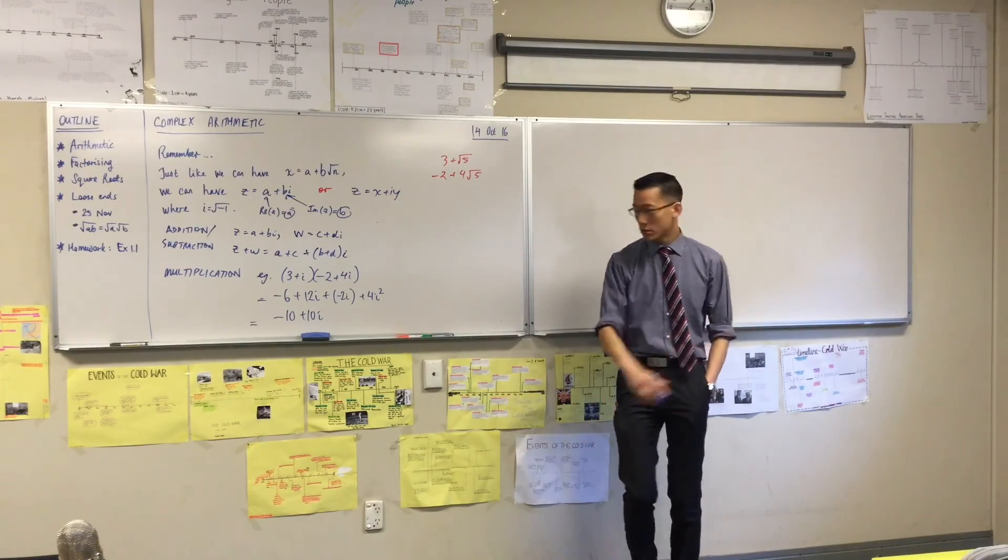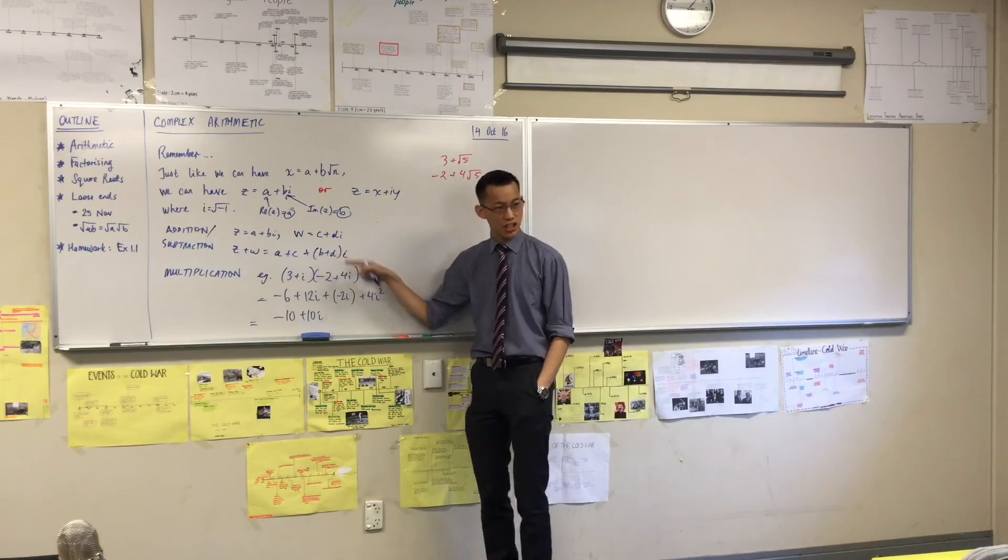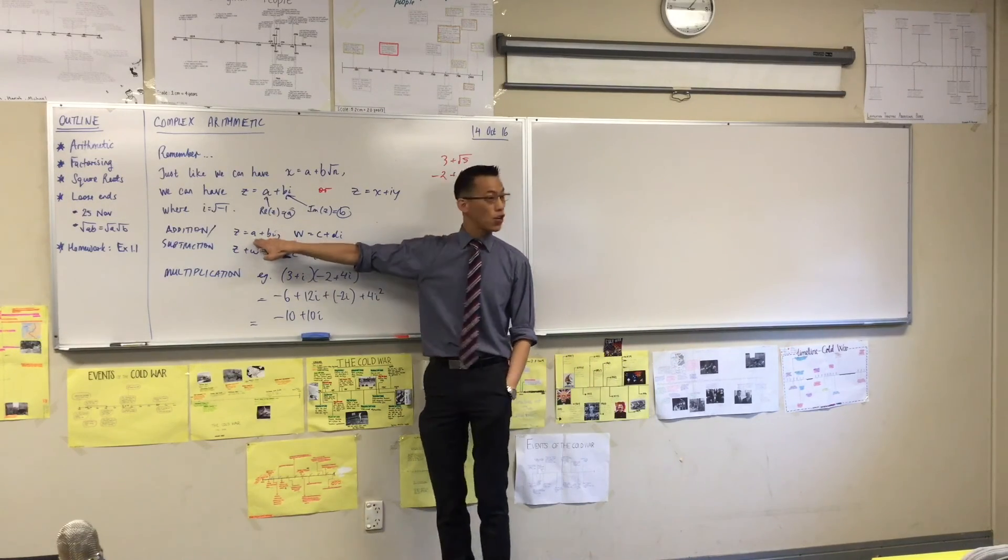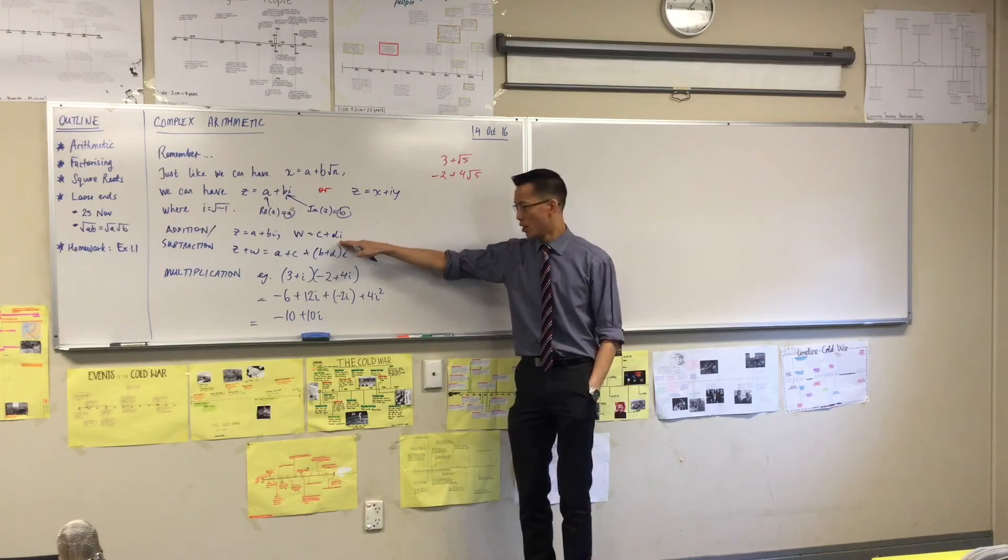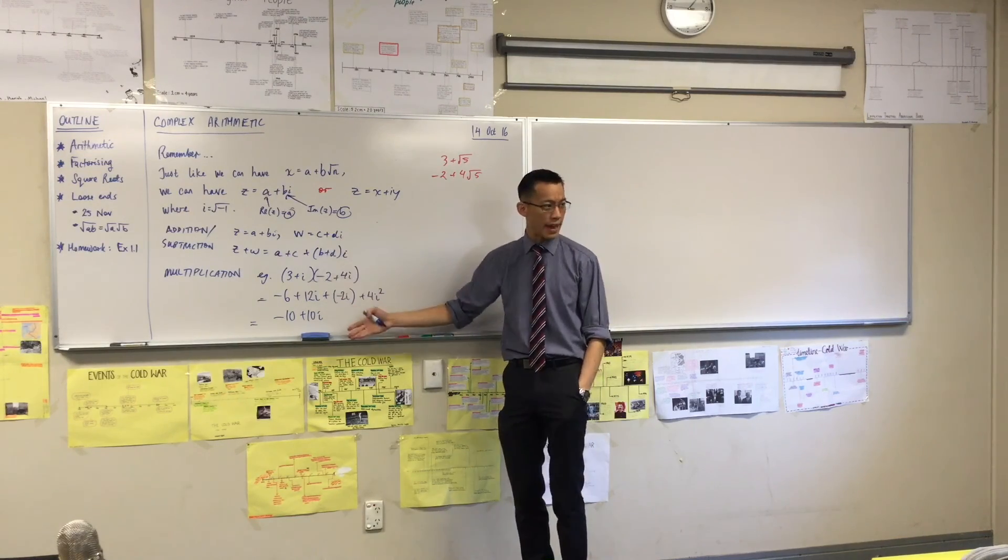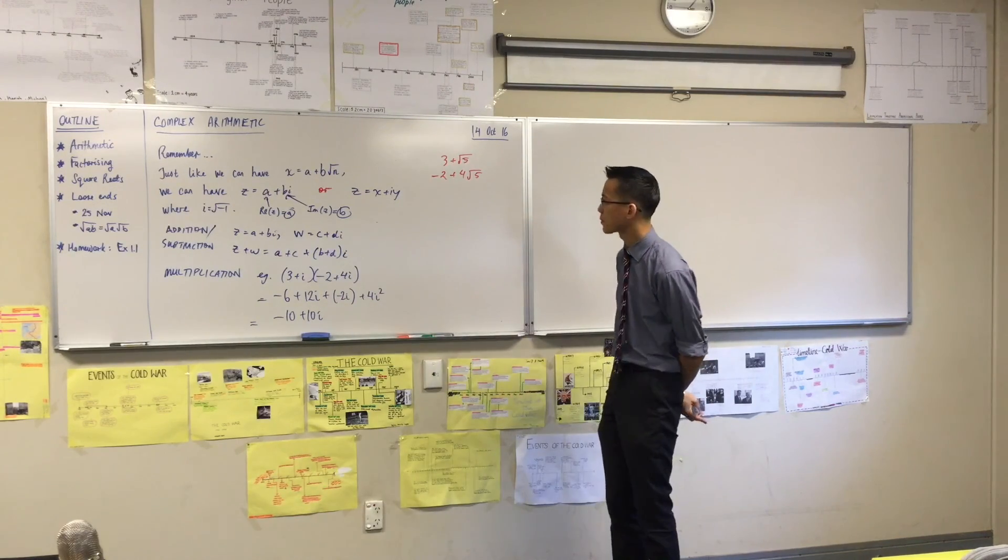I'm going to leave it to you to have a go at just writing this out in general terms. If I had any complex number z and any complex number w, what would this, how would the algebra pan out if I actually multiplied these guys together?